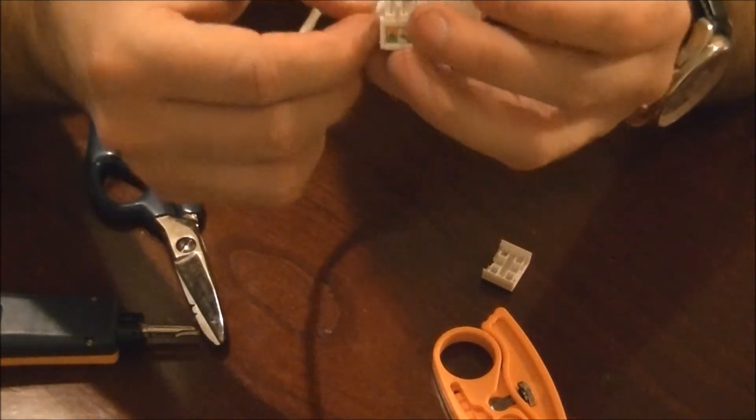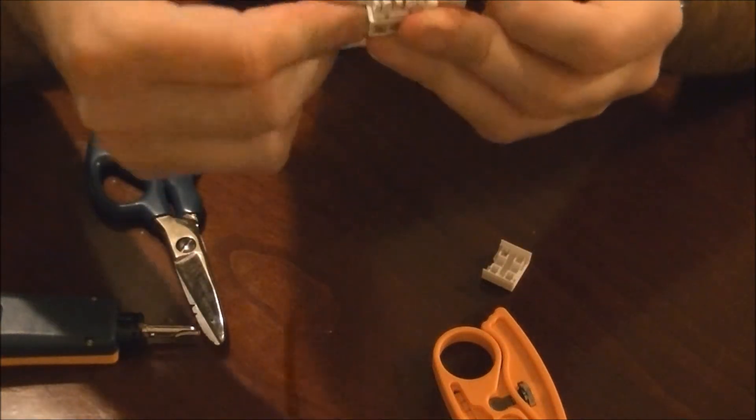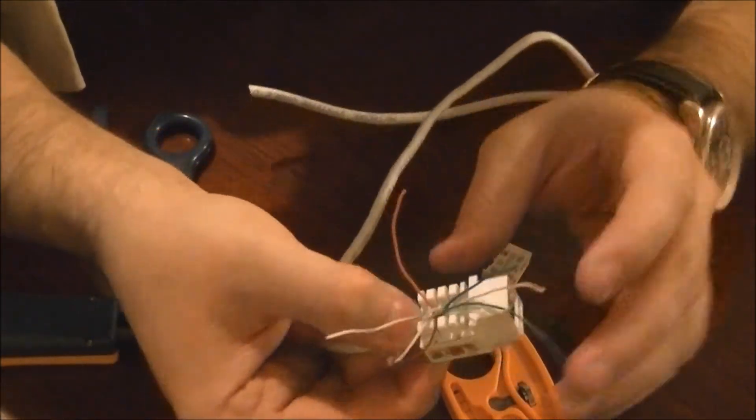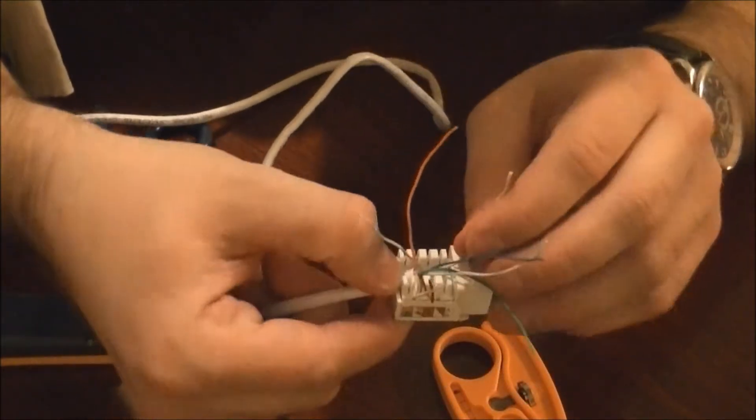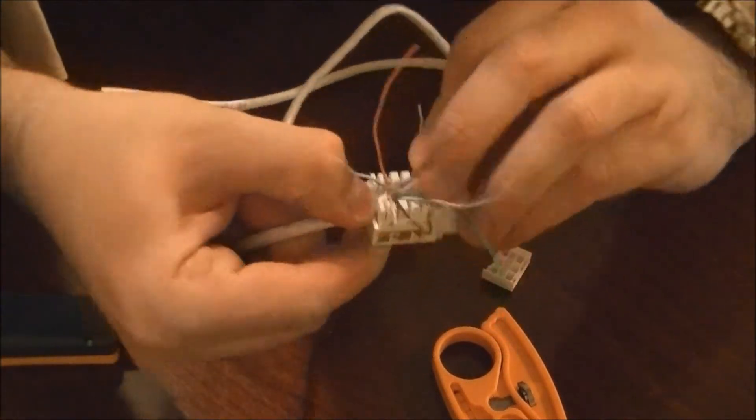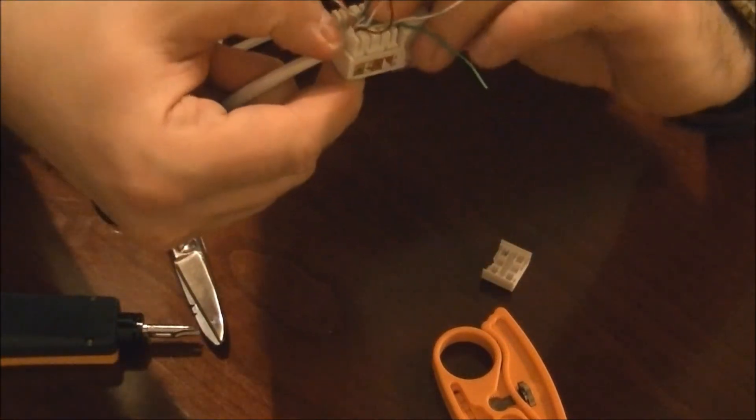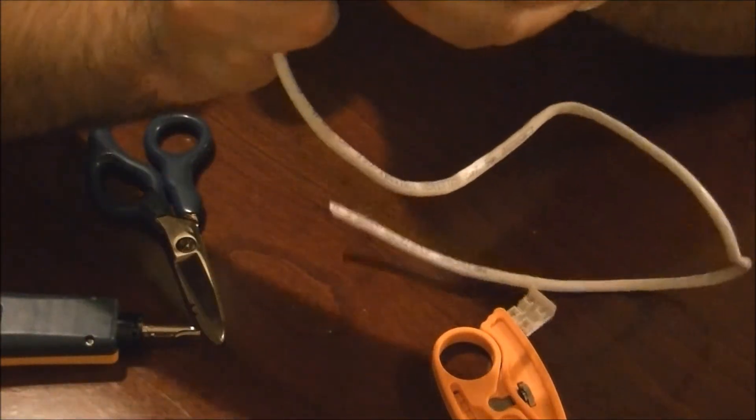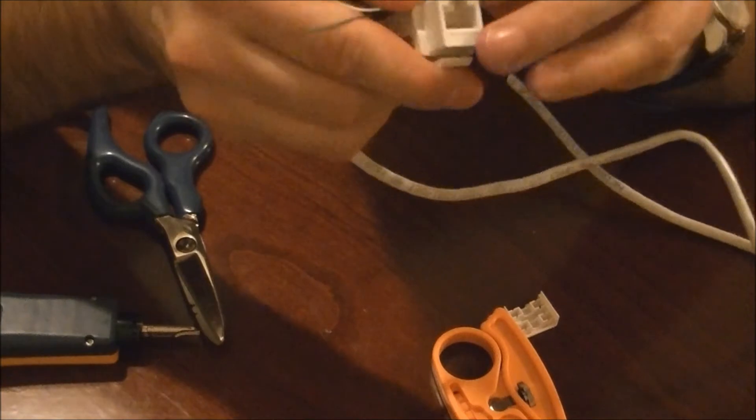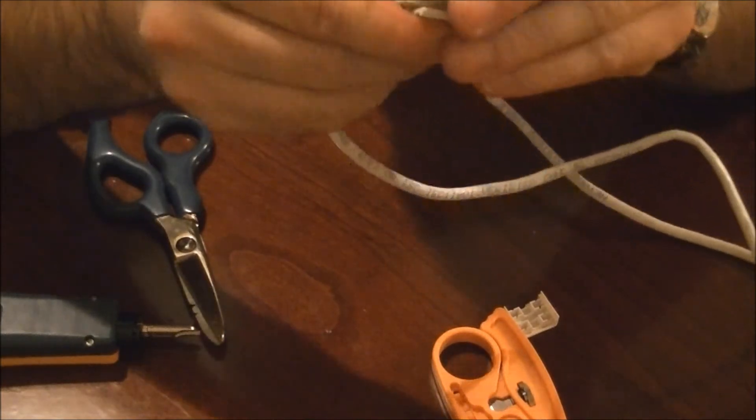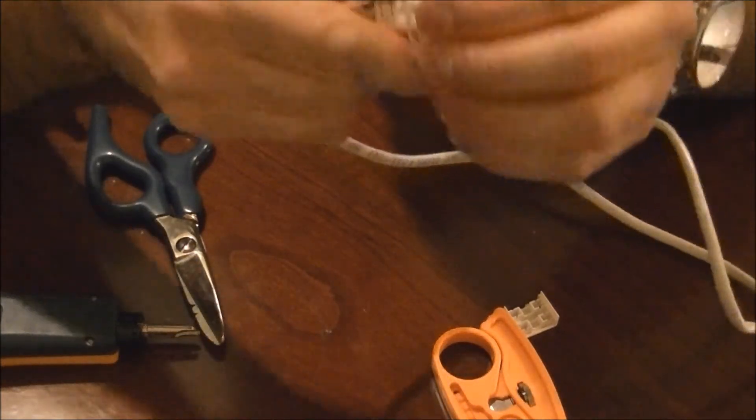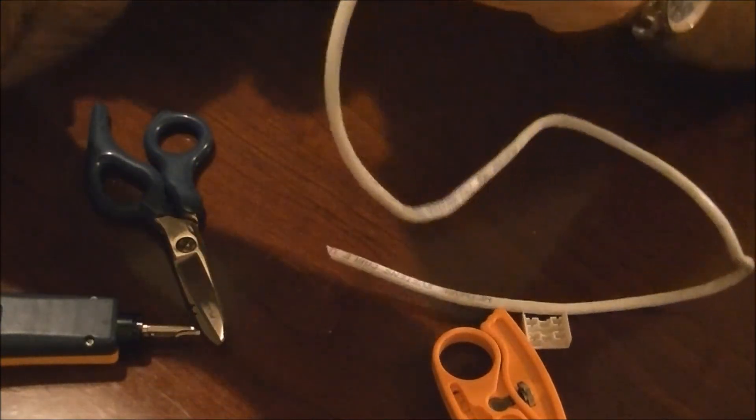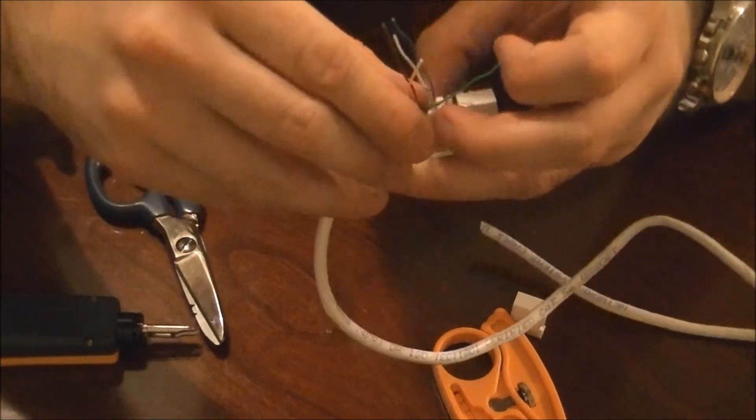You're going to take about an inch, a quarter inch of the patch cable, put it in the jack. You're going to start off with white-orange, put the cable in its place, then orange, then white-blue, then blue.